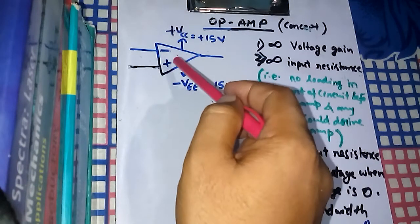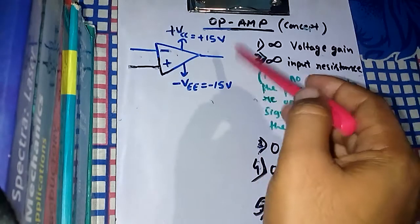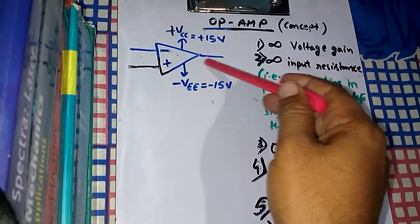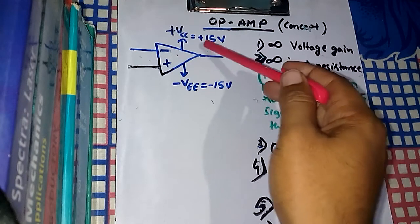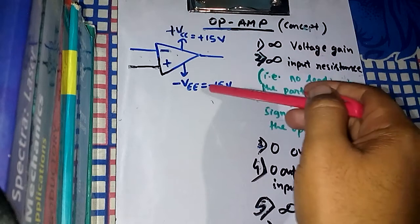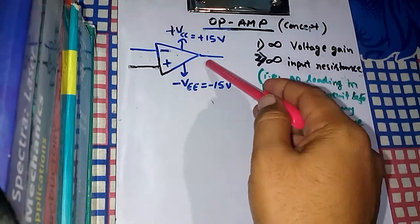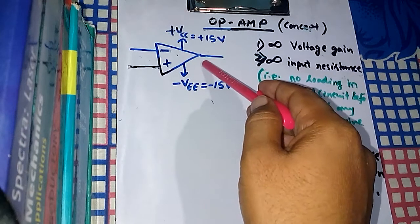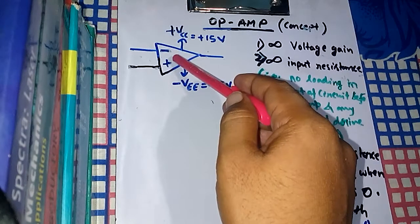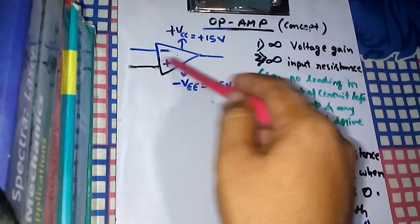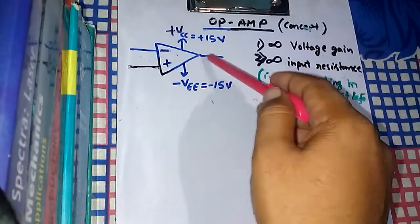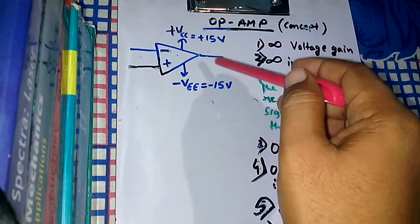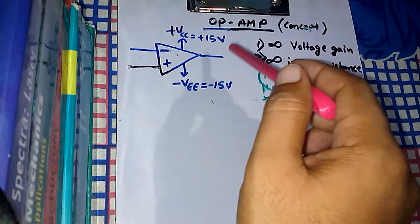One important law: the output voltage of an operational amplifier can never be more than +15V and can never be less than -15V. Whatsoever be the gain of the operational amplifier, the output can never exceed +15V and can never be less than -15V. It will always be between these two voltage peaks.